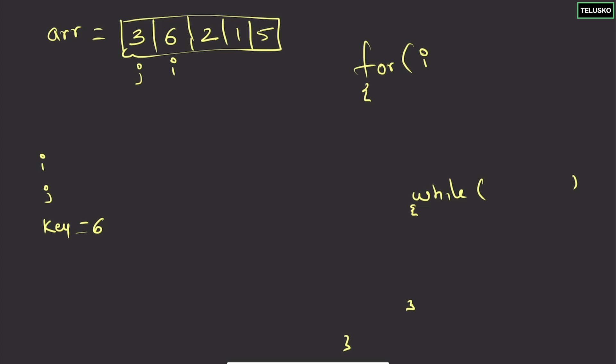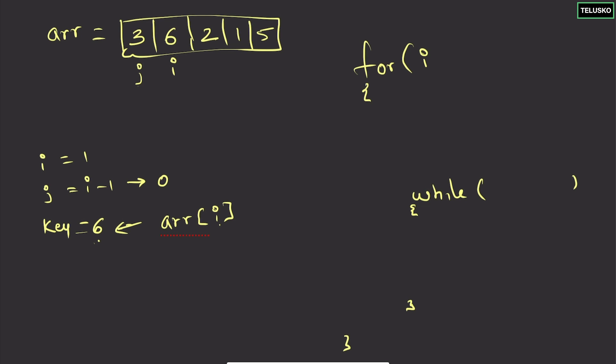The idea is simple: once we have a key — which is six in this case — we get it by doing arr[i] and saving that in the key variable. Then we set j equal to i minus one. We compare the value at j with the key. If the value at j is less than the key, no shifting is needed — it's already sorted. So we move on.